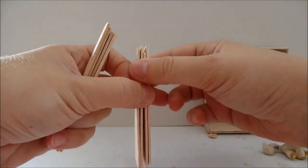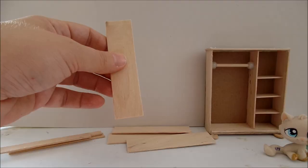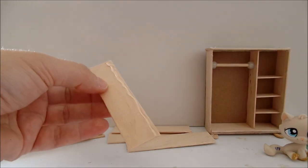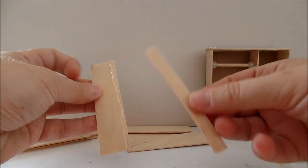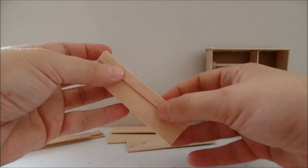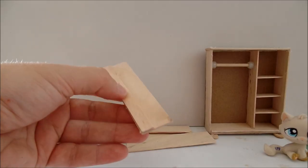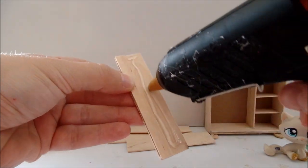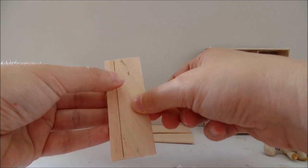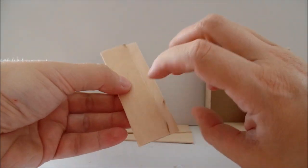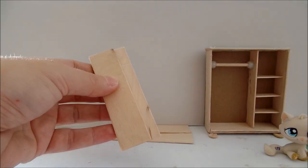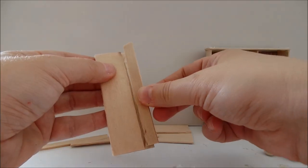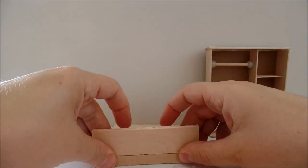Take a jumbo popsicle and on one side glue the smallest popsicle. Now at the remaining space glue the large popsicle. Now turn it around and in the remaining space glue another small popsicle. Repeat this so you have two of these.